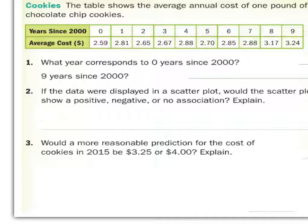If the data were displayed in a scatterplot, would this show a negative, positive, or no association if we were to graph it? It would show positive. How many of you say positive? One too many. How many of you say negative? How many of you say no association?